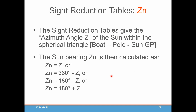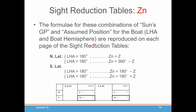The sun's bearing Zn is then calculated using one of four formulas. You don't have to memorize them because these formulas, which come from the sun's GP and your assumed position for the boat giving you LHA and boat hemisphere, are reproduced on each page of the site reduction tables. If you're in northern latitude and your LHA is greater than 180 — a morning sight — your Zn will just be Z. And if your LHA is less than 180 degrees, which means it's an afternoon sight, the Zn will be 360 minus Z.